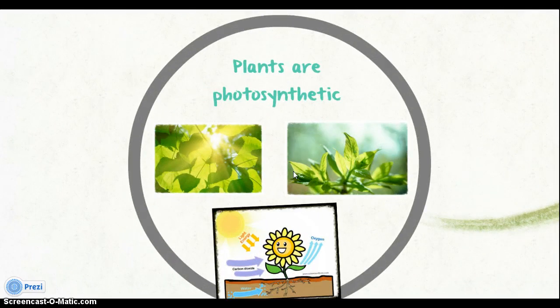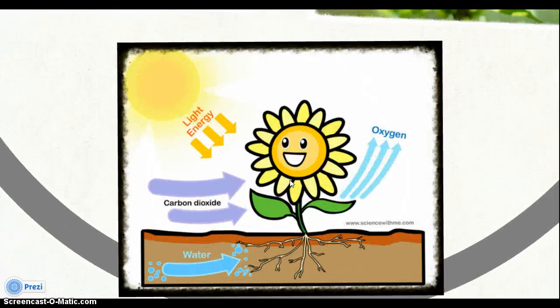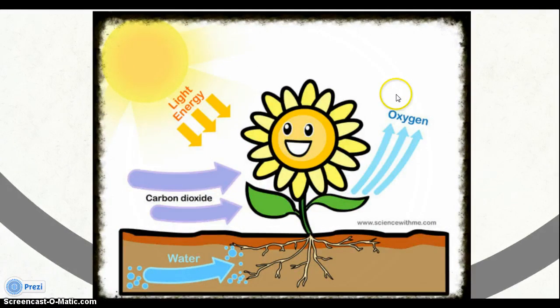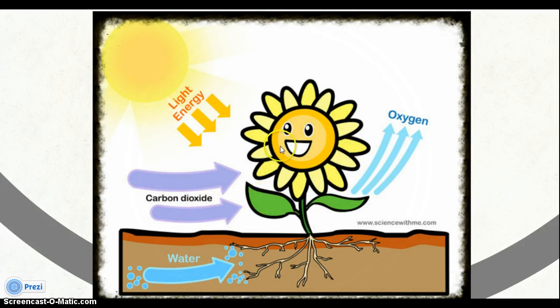The first characteristic is that plants are photosynthetic, while animals are not. Photosynthesis is a process in which organisms use sunlight to synthesize food from carbon dioxide and water. Oxygen is then produced. In this diagram, the plant uses light energy produced by the sun to convert carbon dioxide and water entering the plant into food, and then releases oxygen into the environment.